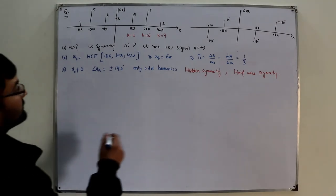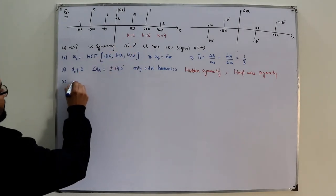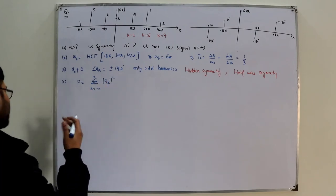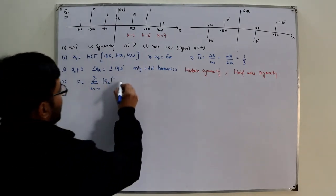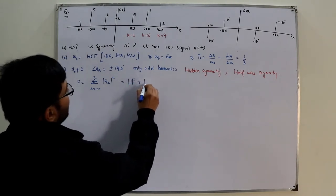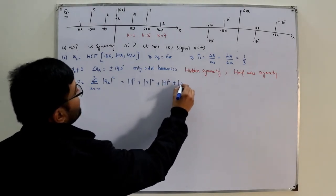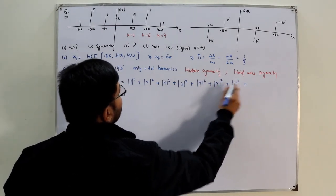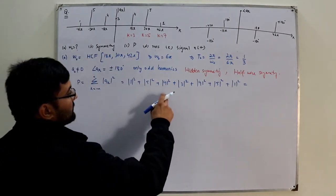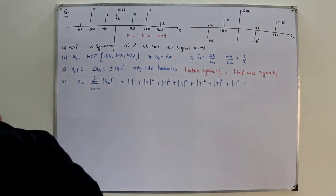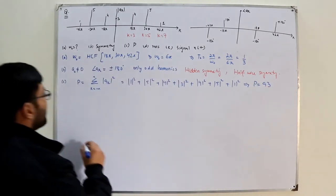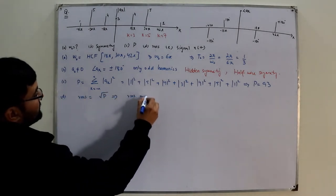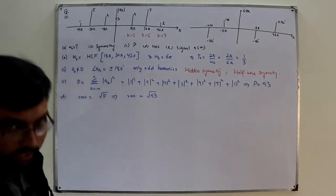For part (c), power using Parseval's relation: P = Σ|a_k|². The magnitudes are: a₀ = 3, and the symmetric pairs give 1² + 5² + 4² + 3² + 4² + 5² + 1² = 1 + 25 + 16 + 9 + 16 + 25 + 1 = 93. So total power = 93. For part (d), RMS = √Power = √93.